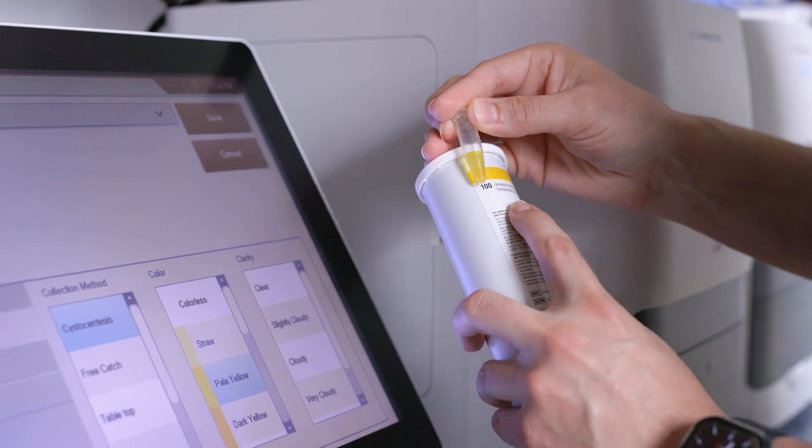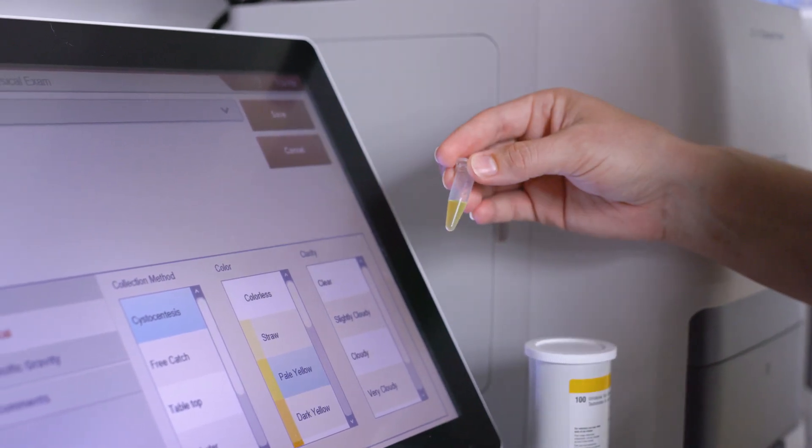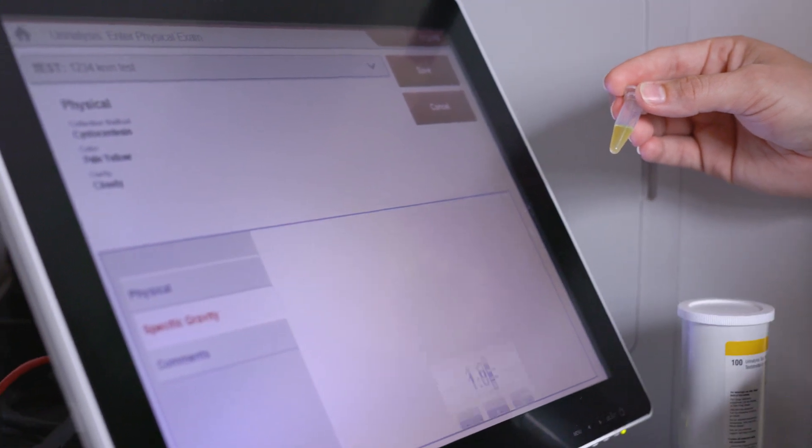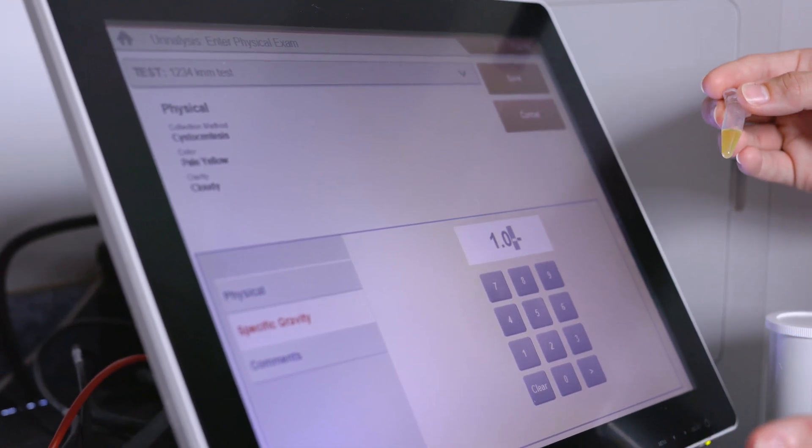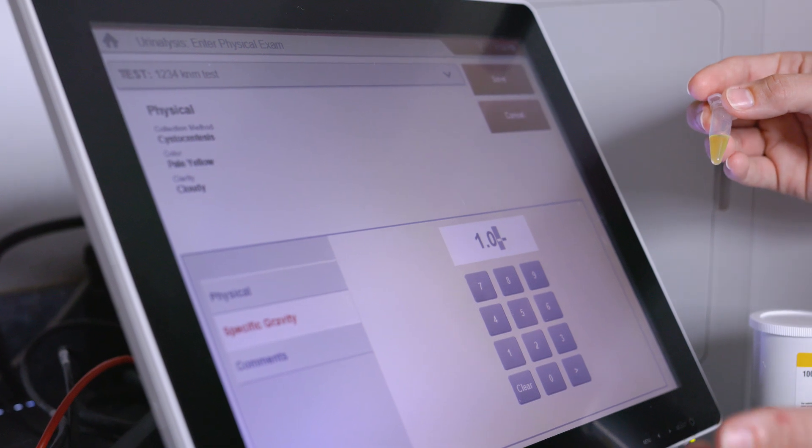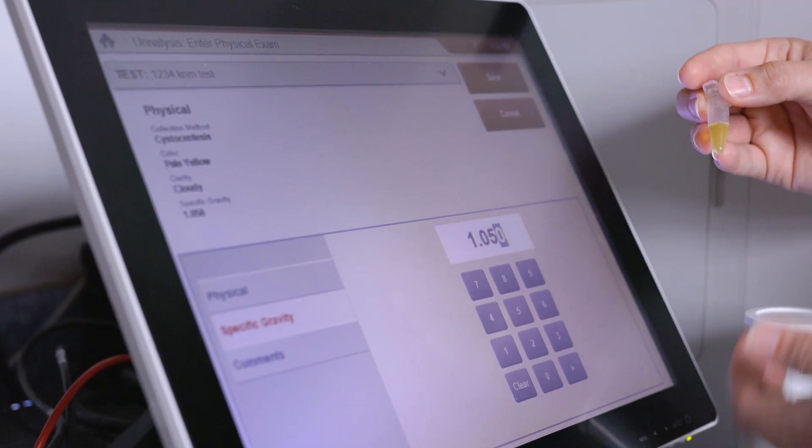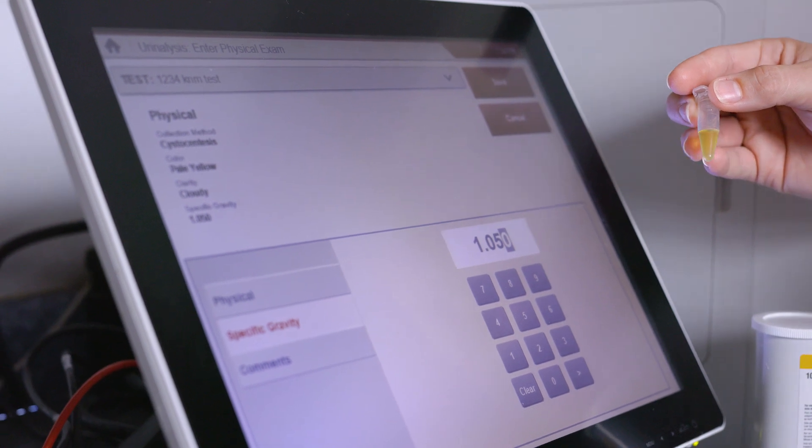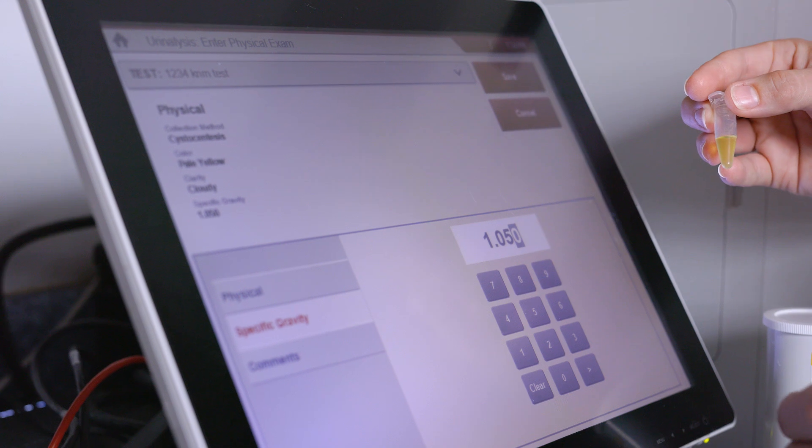It's not opaque. It doesn't have flocculant material kind of floating around in it. So we're going to call this one cloudy. And then our specific gravity is where we use our refractometer to measure this value. And so on this sample, the only option that we do have, because when our samples are greater than 1050 for our specific gravity, there is not a specific number that we can associate with it.